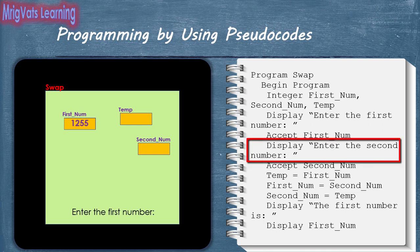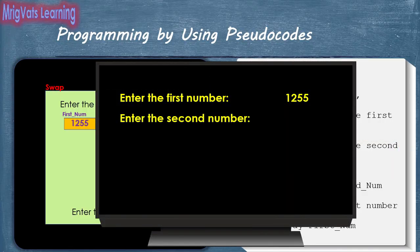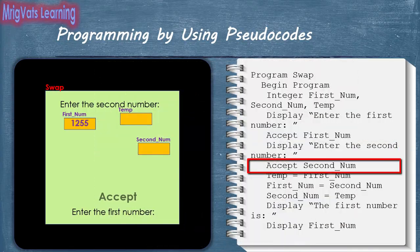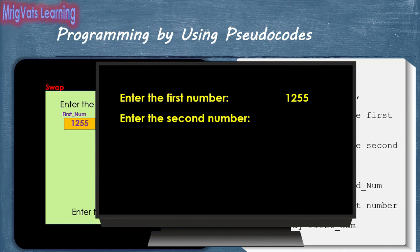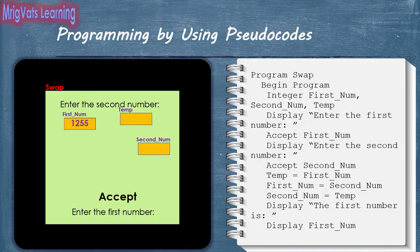With the next display statement, the program writes 'Enter the second number' text in memory, which the display statement takes as input and displays on the virtual display board. When the accept statement is run, it waits for the user to input the second number. As soon as the user enters a value, for example 209, the accept statement stores the value in the secondnum variable.